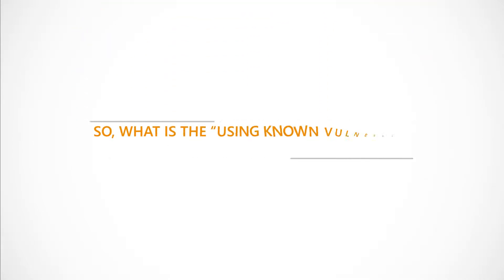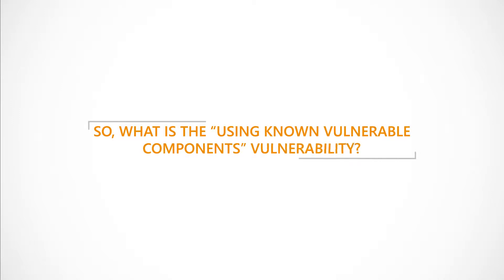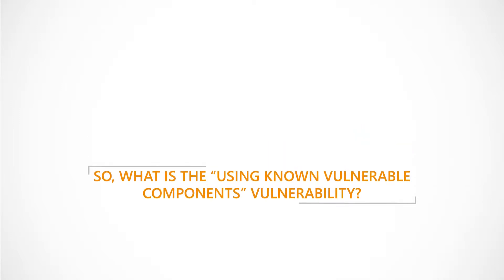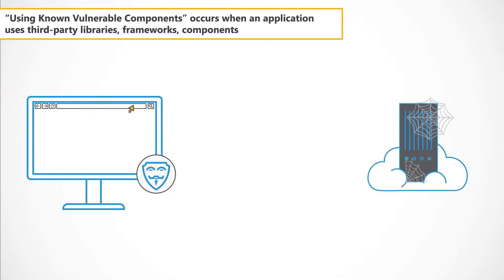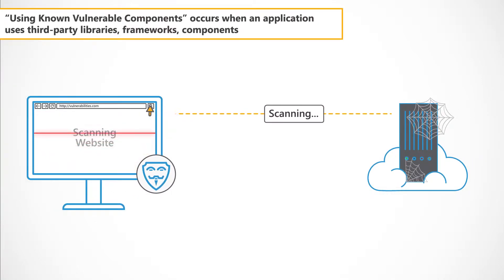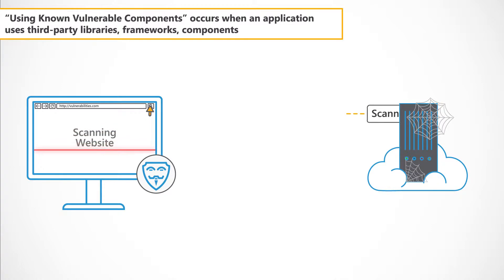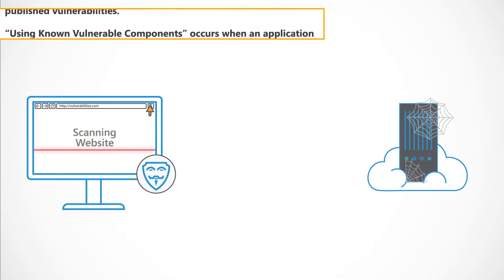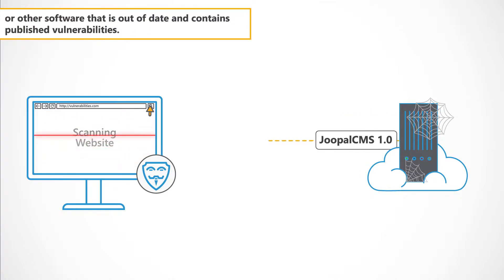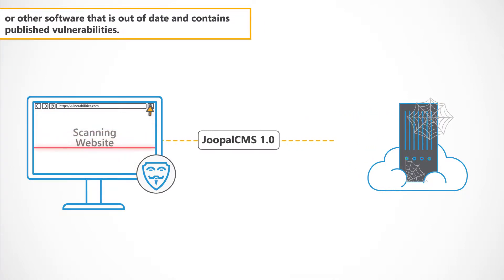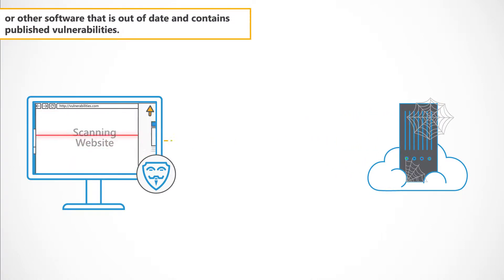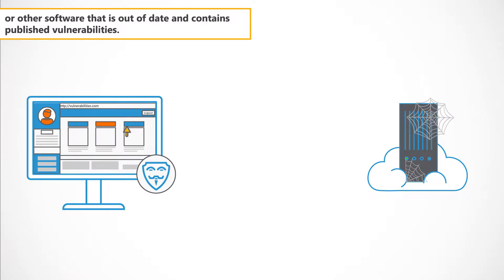So, what is the using known vulnerable components vulnerability? Using known vulnerable components occurs when an application uses third-party libraries, frameworks, components, or other software that is out-of-date and contains published vulnerabilities.